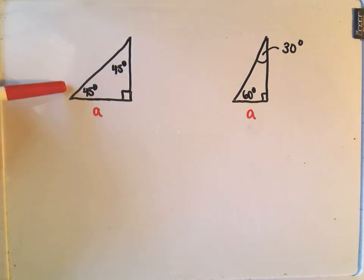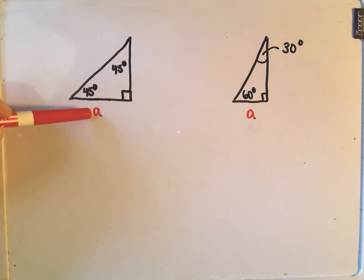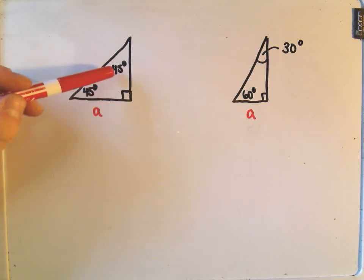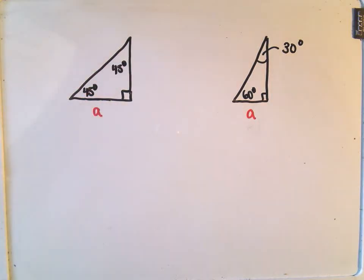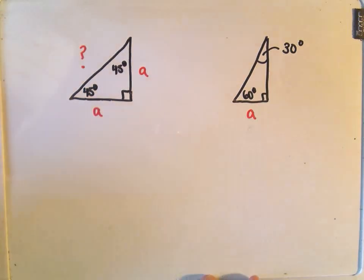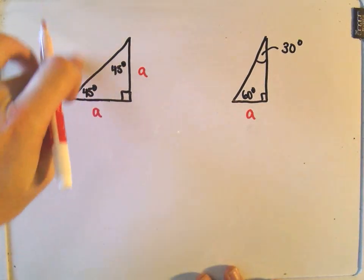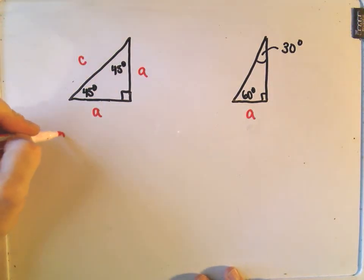Let's look at the 45-45-90 triangle first. Suppose that opposite one of the 45-degree angles, that side of the triangle has length a. If opposite one 45-degree angle the length is a, then this other side is also going to have length a, because it's also opposite an angle with degree measure of 45 degrees. We'd like to figure out this missing side — let's call it c.